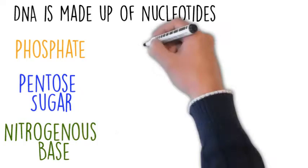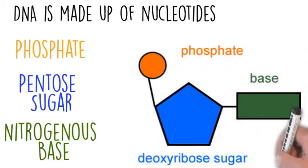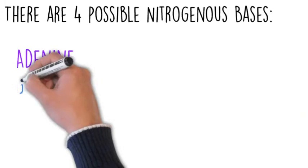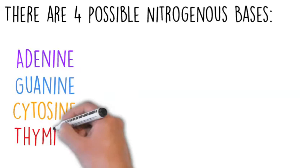A phosphate group, a pentose sugar which is a five-carbon deoxyribose, and one of four nitrogenous bases. There are four nitrogenous bases in DNA: adenine, guanine, cytosine, and thymine, represented by the letters A, G, C, and T respectively.